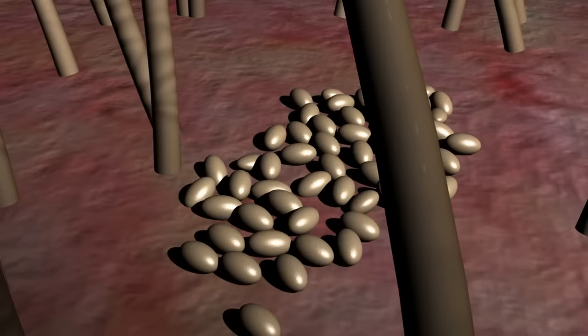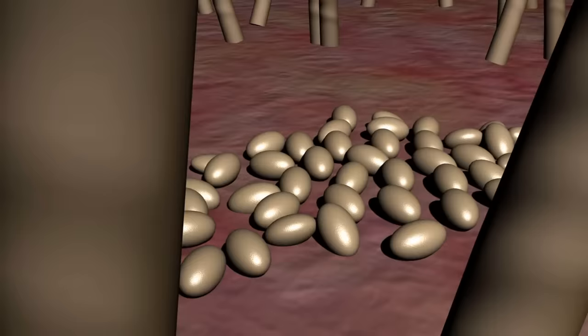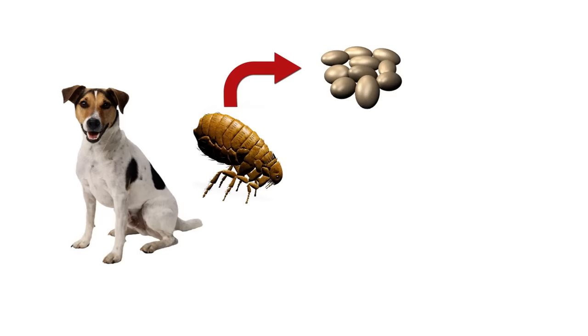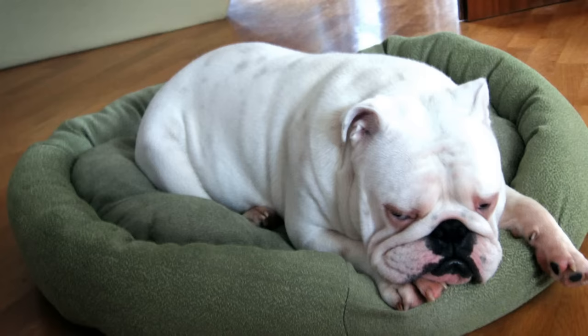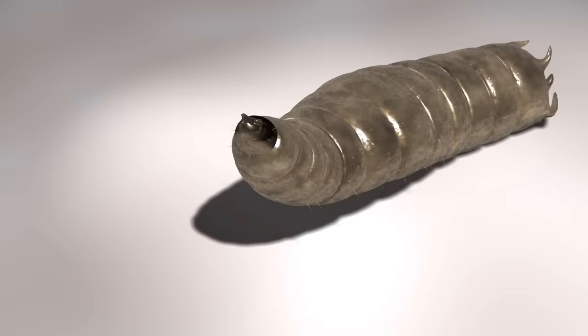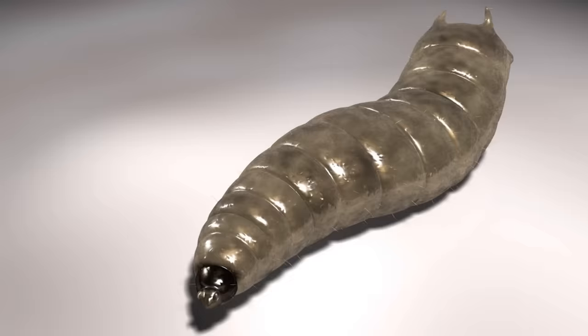Female fleas are capable of laying up to 40 to 50 eggs per day. These eggs will then fall off the pet onto the carpet, sofa, yard, or other locations the pet visits frequently. These eggs are very small white spheres that will hatch into larvae in 2 to 14 days depending on the conditions. Flea larvae emerge from the eggs to feed on any available organic material, including feces of other fleas, known as flea dirt. Flea larvae tend to avoid light and keep to dark places such as cracks, crevices, and bedding.